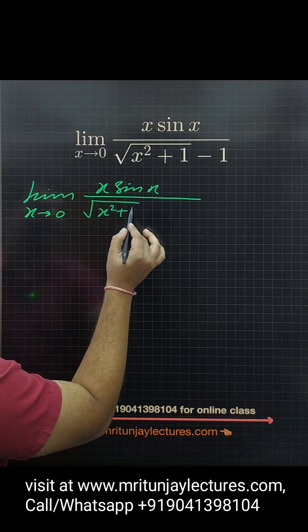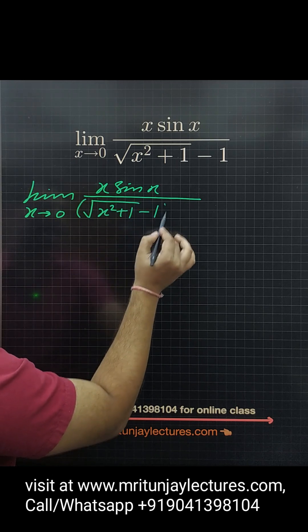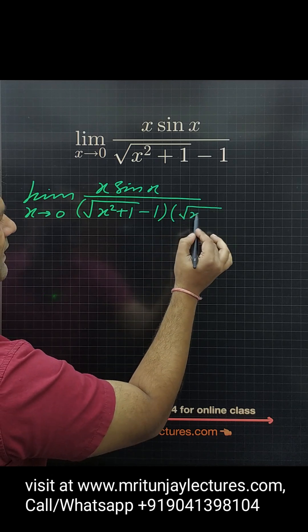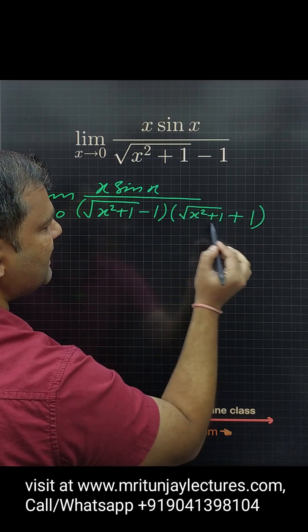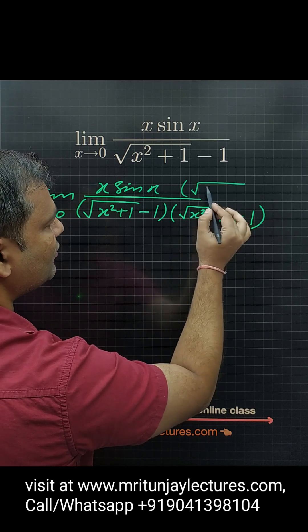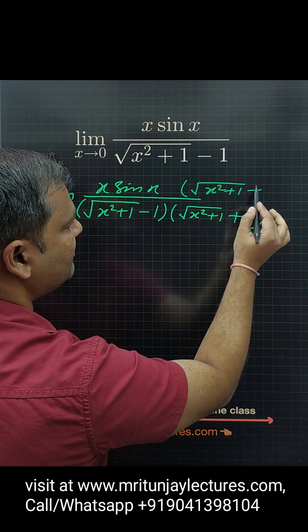So simply, first of all, eliminate roots. How can we eliminate that roots? Simply if we rationalize by root x square plus 1 plus 1.